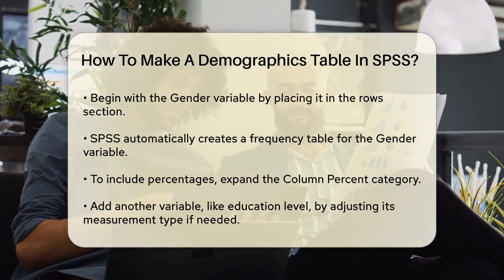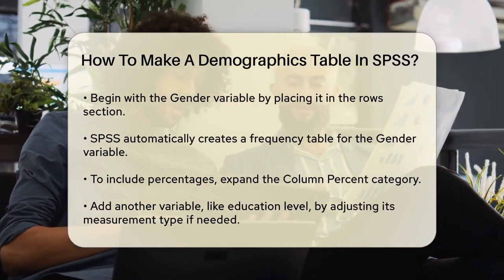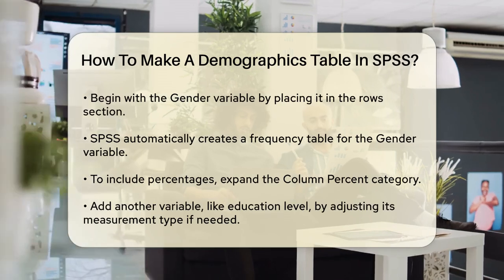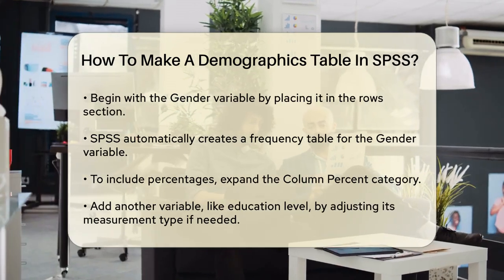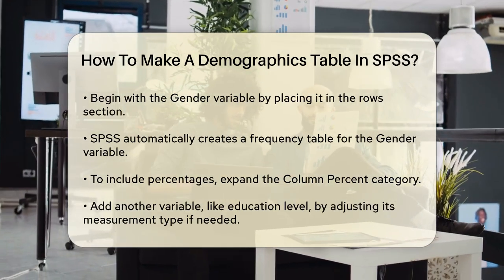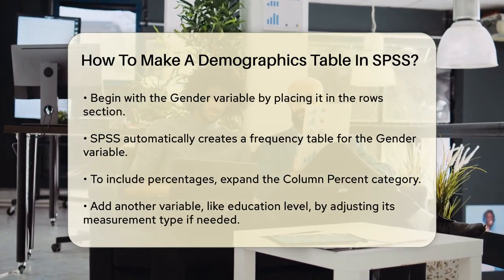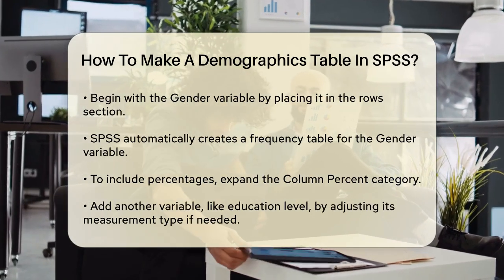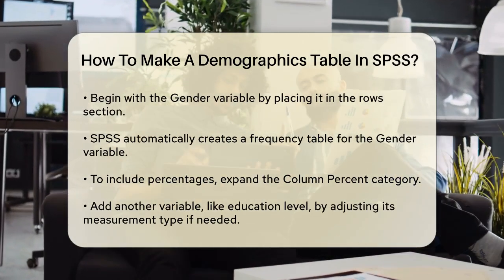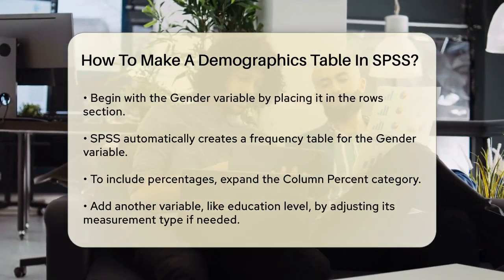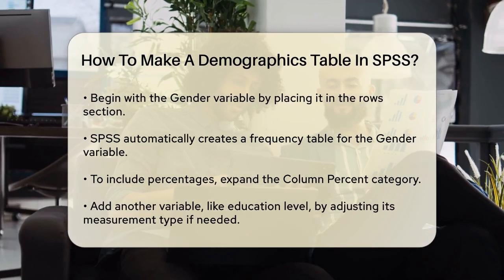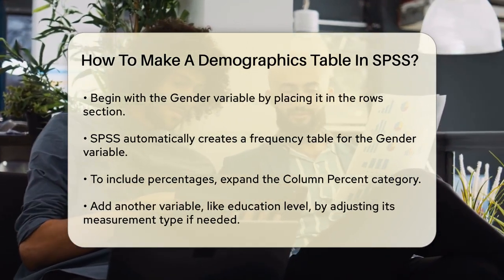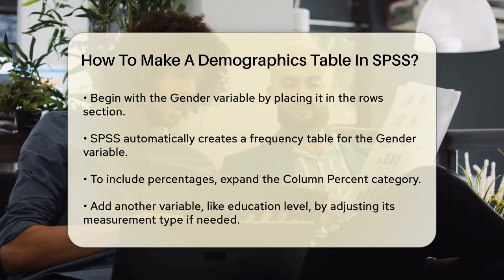Let's say you want to start with gender. Drag the gender variable into the rows section. By default, SPSS will create a frequency table showing the count of each gender category. If you need percentages, you can expand the column percent category and add it to your table.